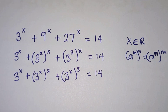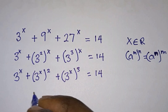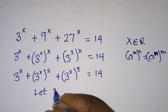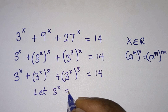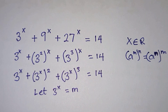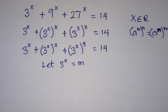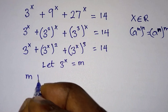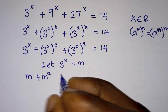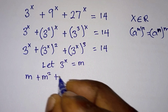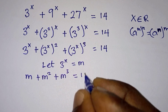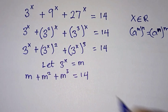Now we want to let 3 to the power x equal to m, so the equation now becomes m plus m squared plus m cubed is equal to 14.